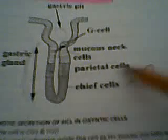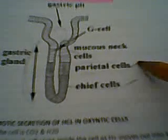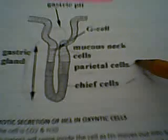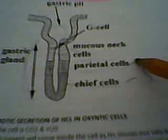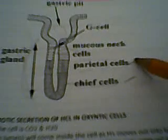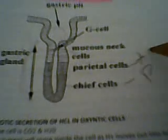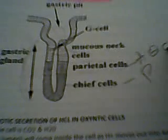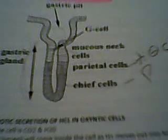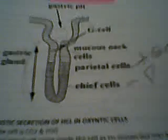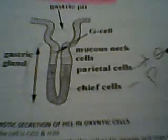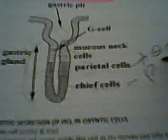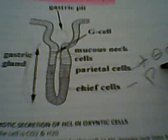The parietal cells are acid-secreting oxyntic cells. They secrete hydrochloric acid in particular, and they are closer to the gland opening.